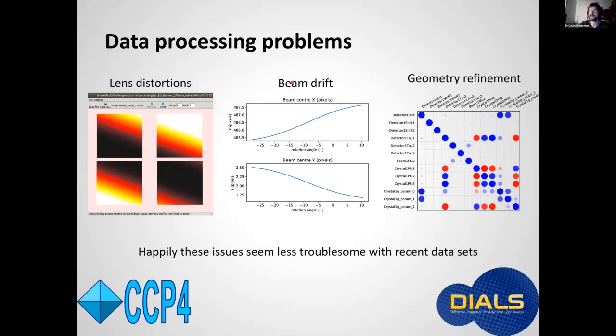Second thing is that the beam can drift during the experiment. So we had to add a way to model that. We added a way to model it globally with a smoothly varying function. For this data set, we saw that the beam drifted by about one or two pixels in each direction, which is not a huge amount, but correcting this does improve the integration results.